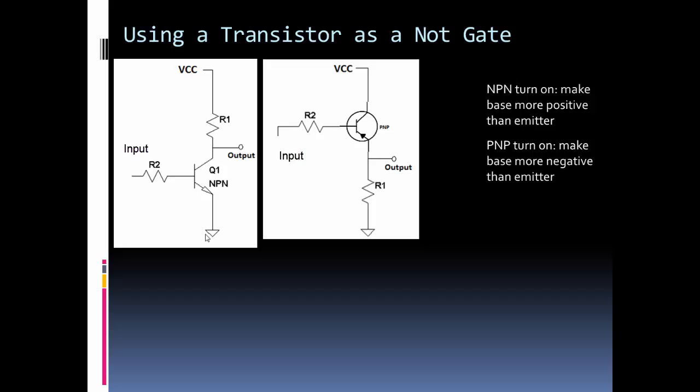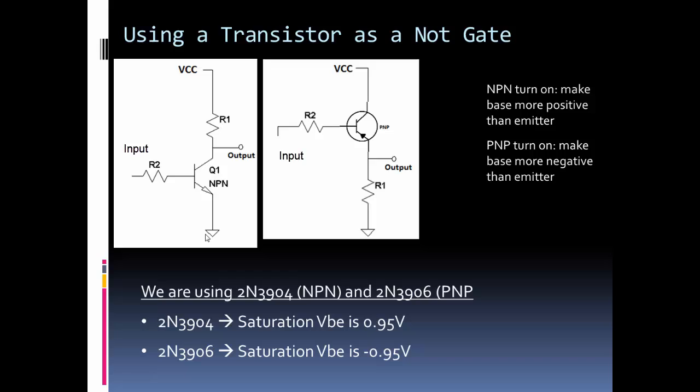Now one thing to note: for the PNP transistor, when I say we want to make the base more negative than the emitter doesn't mean there needs to be a negative voltage at the base, it just means that the voltage at the base has to be more negative than the emitter. For the transistors that I'm going to be using, and these are common transistors, very popular model number transistors, the 2N3904 is the NPN and the 2N3906 is the PNP one. Their saturation voltage, and when I say saturation that's to make them act like a short, is 0.95 volts, but I think they can take up to 6 volts on the base. So if you have an Arduino that's 5 volts or an Arduino 3.3 volts, you can use that to turn this on or off as logic levels for this NOT gate.